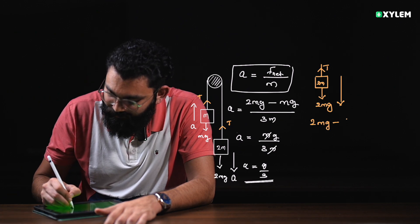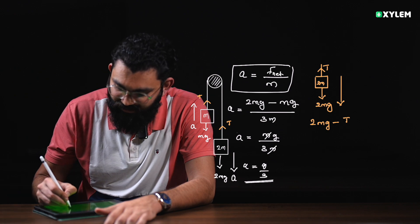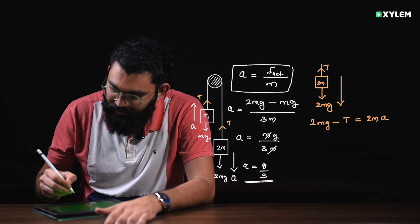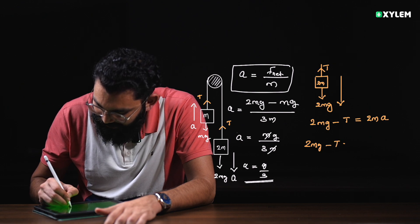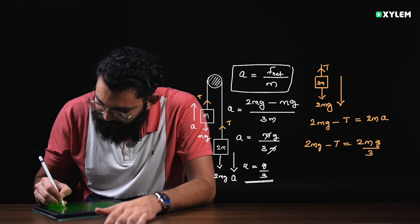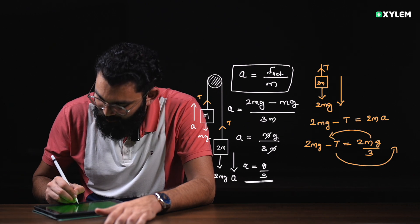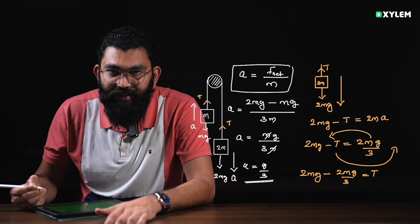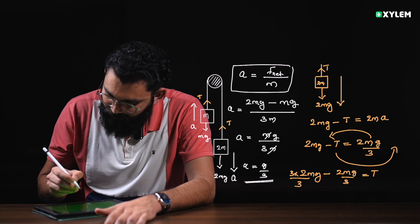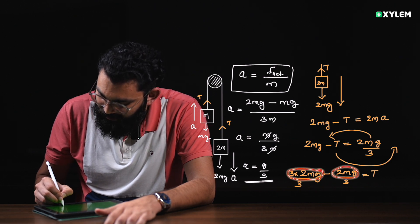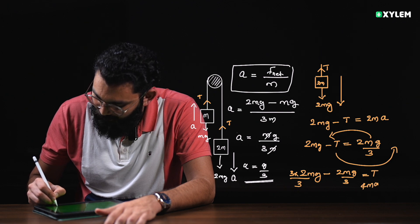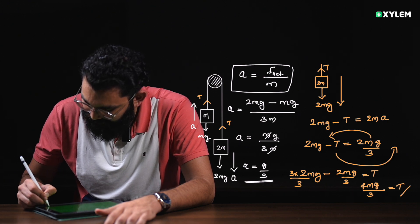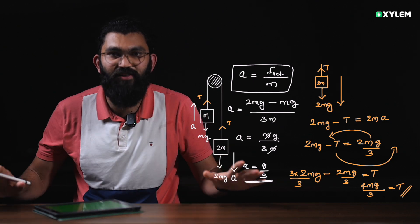The tension calculation: 2mg minus tension equals 2m times a, where a equals g by 3. So tension equals 2mg minus 2mg divided by 3. With a common denominator of 3: that is 6mg minus 2mg equals 4mg, so tension equals 4mg divided by 3.